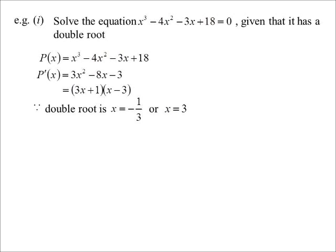That factorises to be 3x plus 1, x minus 3. So it gives me two possibilities for the double root. Either it's going to be 3, or it's going to be minus a third. One of those makes sense, one of those does not.